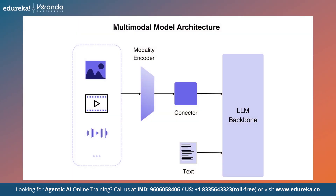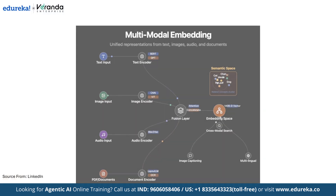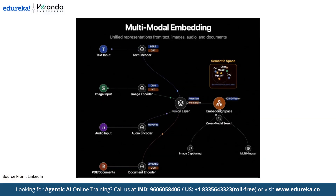Let me take another example to explain this diagram. The model can take text, images, audio or even video as input. The encoders for each modality work as follows: a text encoder converts words into vectors, an image encoder converts pixels into vectors, and an audio encoder converts sound waves into vectors. Next is the shared embedding space, where all these different inputs are translated into a common AI language — a vector space where similar meanings are close together. For example, the word 'car' and a picture of a car are mapped close together.